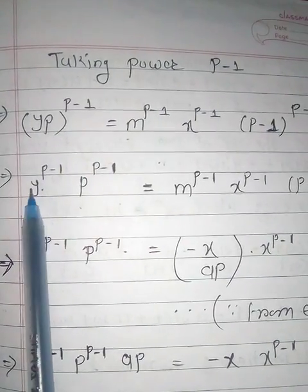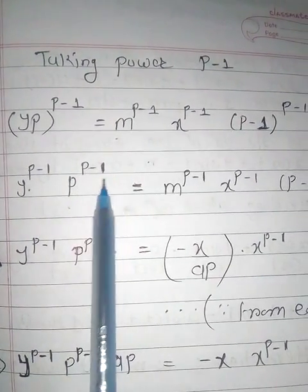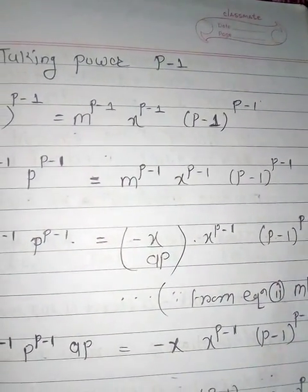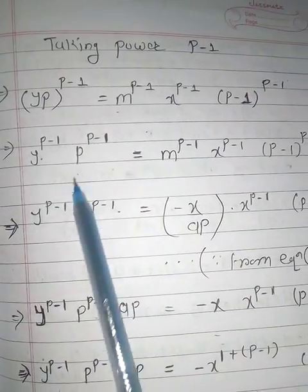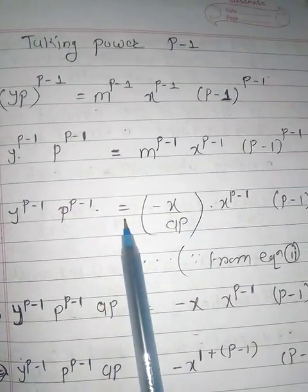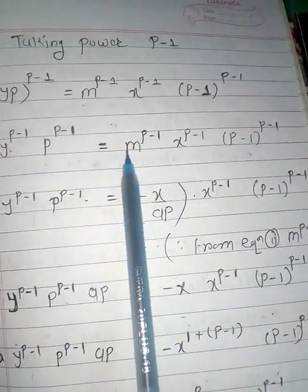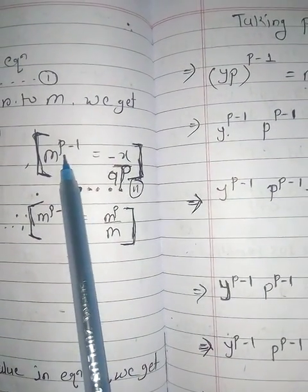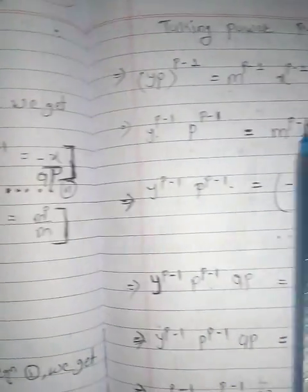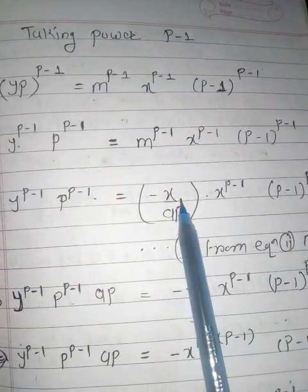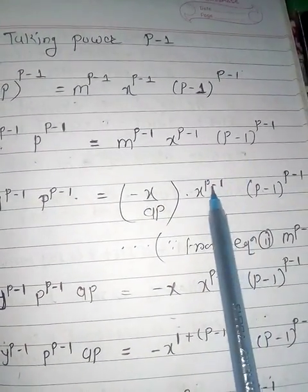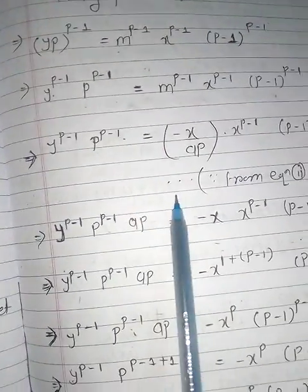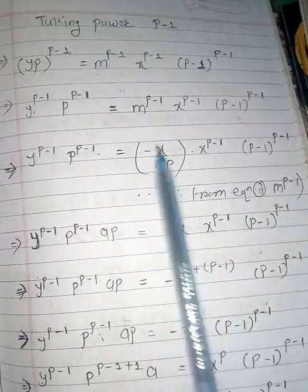Separating the powers: y^(p-1) · p^(p-1) equals m^(p-1) · x^(p-1) · (p-1)^(p-1). We substitute equation number two here — m^(p-1) equals minus x upon ap — giving: y^(p-1) · p^(p-1) equals (minus x upon ap) · x^(p-1) · (p-1)^(p-1).